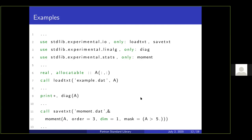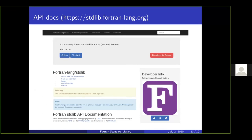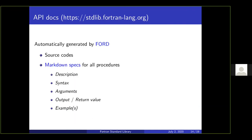Since about a month ago, there is a website associated with the standard library — generated by Fortran and based on the source code and specs associated to the different procedures. If you go to this website, you'll have an overview of what is already implemented, and a description of different procedures. For each function or subroutine, you'll find a description of what it does, the syntax, the different arguments, definitions, output and return values, and also some examples.